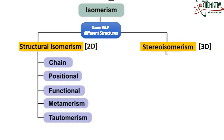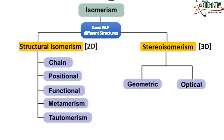When we talk about stereoisomerism, it is also classified into two types. Number one type is called geometric isomerism and the second type is called optical isomerism. In this lesson I will only explain structural isomerism and its types with examples. If you want to understand stereoisomerism, you can find the link of another video in the description.